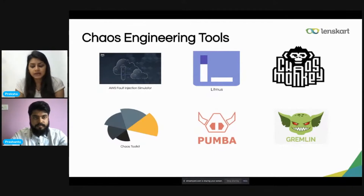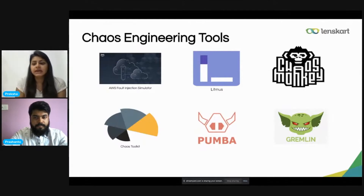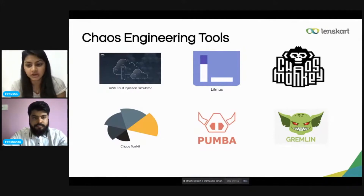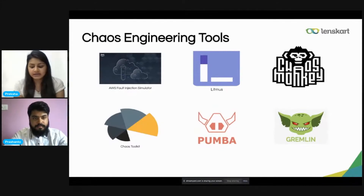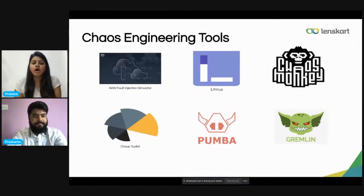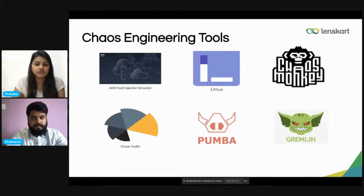Next is Litmus — a framework for Kubernetes environments that enables users to run their test suites, capture logs, generate reports, and execute chaos tests. It is basically used as a stateful set workload for Kubernetes. Next is Pumba — chaos testing and network emulation for Docker containers and clusters. Then Chaos Monkey — the tool developed by Netflix, the first company to start Chaos Engineering. It is a resiliency tool that helps applications tolerate random instance failures. Then Gremlin — a Chaos Engineering platform that supports testing on Kubernetes clusters. For this session, we will be focusing on the Litmus tool, which we also use in our company.